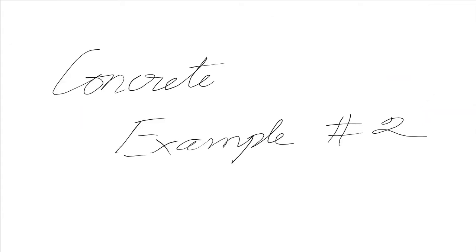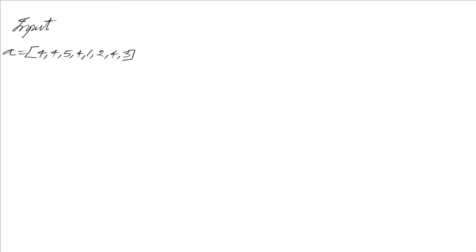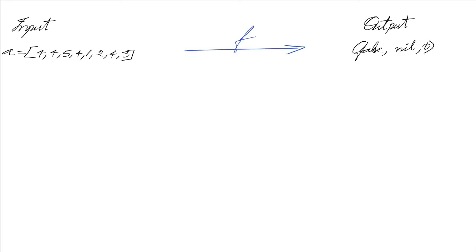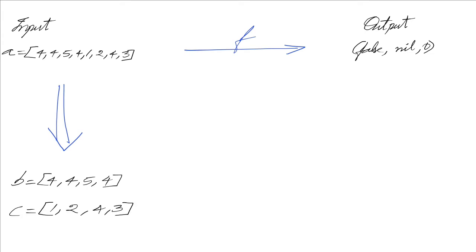Let's look at concrete example two. The input is a given list, for which we have false, nil, and zero. In the reduction step, we have the first half of the list as B and the second half as C. The output for the first half is true because four occurs more than half the size of that particular sublist — total size is four and more than half means three. So it's a majority element: we say true, four is the element, and it occurs three times.